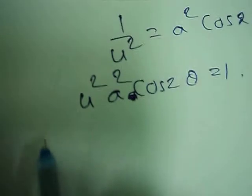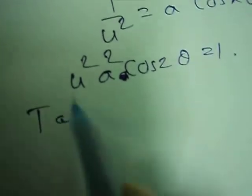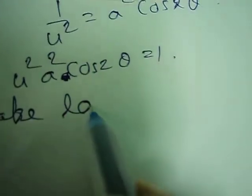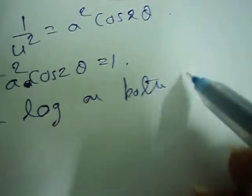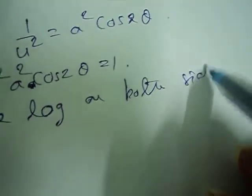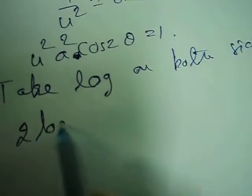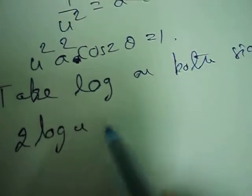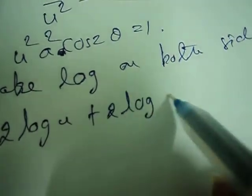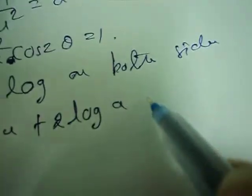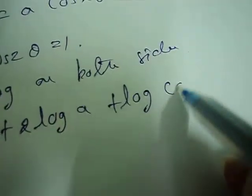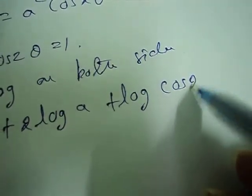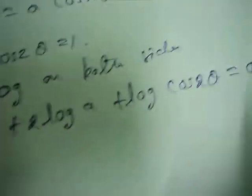Take log on both sides. It will become 2·log(u) + 2·log(a) + log(cos(2θ)) = 0.